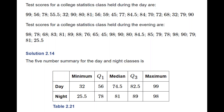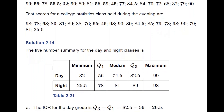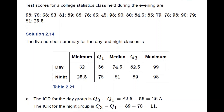You are given a five-number summary for each class, which includes the minimum, maximum, Q1, Q2, and Q3. Please pause the video and verify that these numbers are correct. The interquartile range for the day group, Q3 minus Q1, turns out to be 26.5, and the IQR for the night group turns out to be 11.